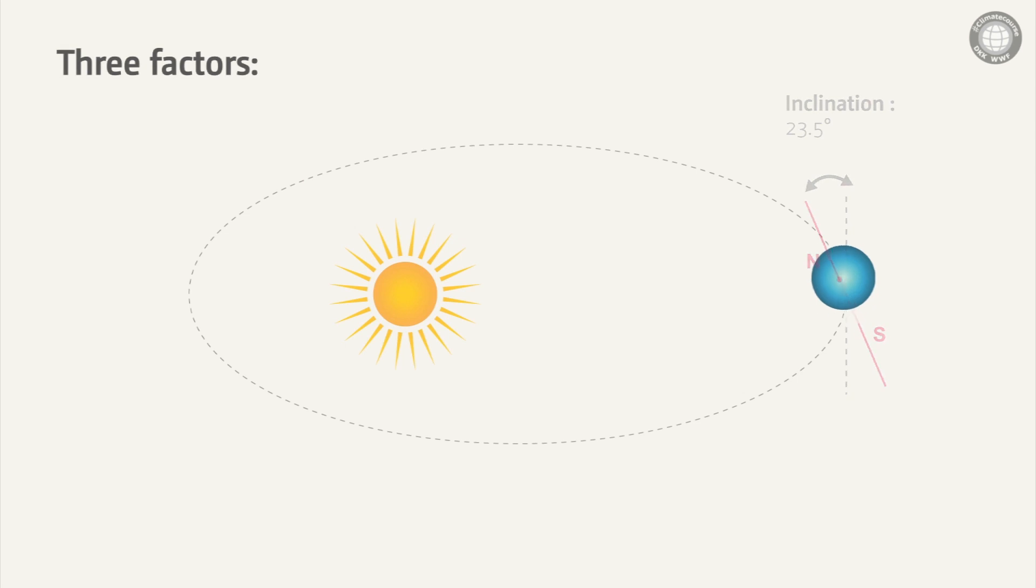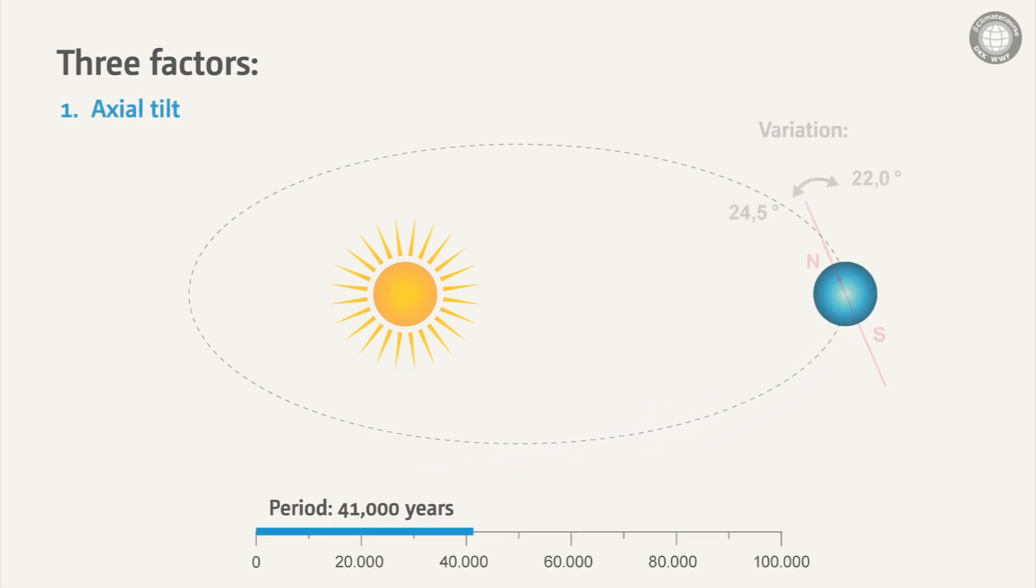Three factors are especially significant for glacial cycles. First of all, Earth axial tilt, or obliquity, with regard to its orbit. The inclination varies between 22 and 24.5 degrees in time spans of about 41,000 years.